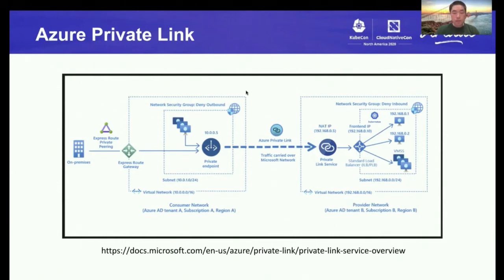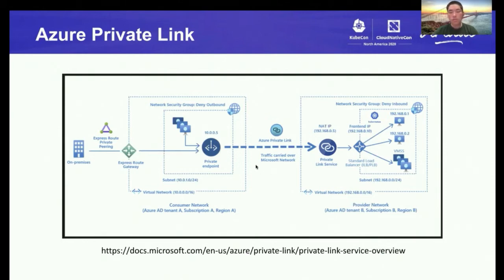As you can see in the diagram, if you want to use Azure PrivateLink, you need to first provision one private endpoint within your virtual network and connect it to the PrivateLink service inside the service provider's virtual network — in this case, the Databricks virtual network. Then you send your traffic to this private endpoint inside your vNet, which has a local IPv4 address, and Azure PrivateLink takes care of the traffic routing using Azure networking instead of the public internet.